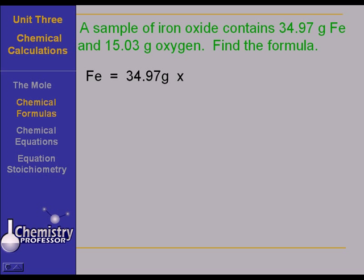We take our iron, which is 34.97 grams, and we convert it to moles of iron atoms. It is 1 mole over 55.85 grams. 55.85 grams is the gram atomic weight of iron. And that tells me that I have 0.6261 mole of iron.